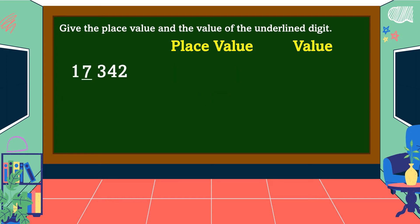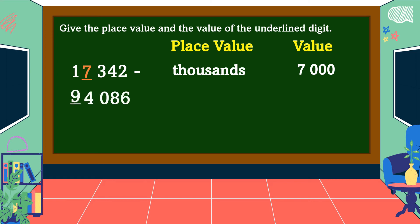Next number. The underlined digit is 9. What is the place value of 9? The place value of 9 is ten thousands. And the value of 9? Very good — 90,000.